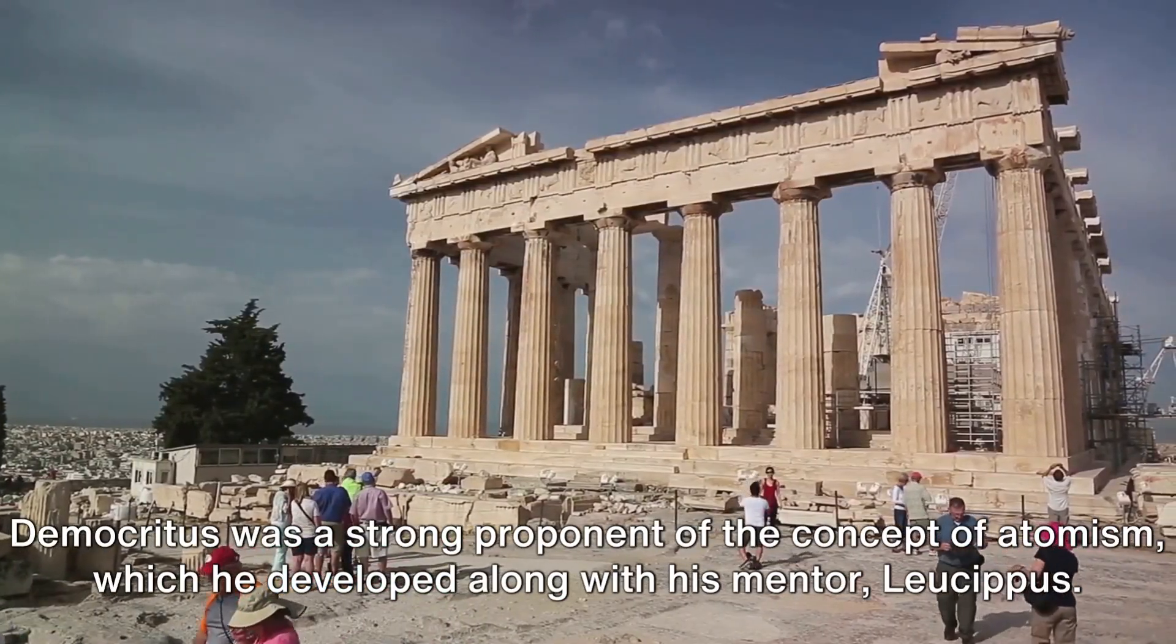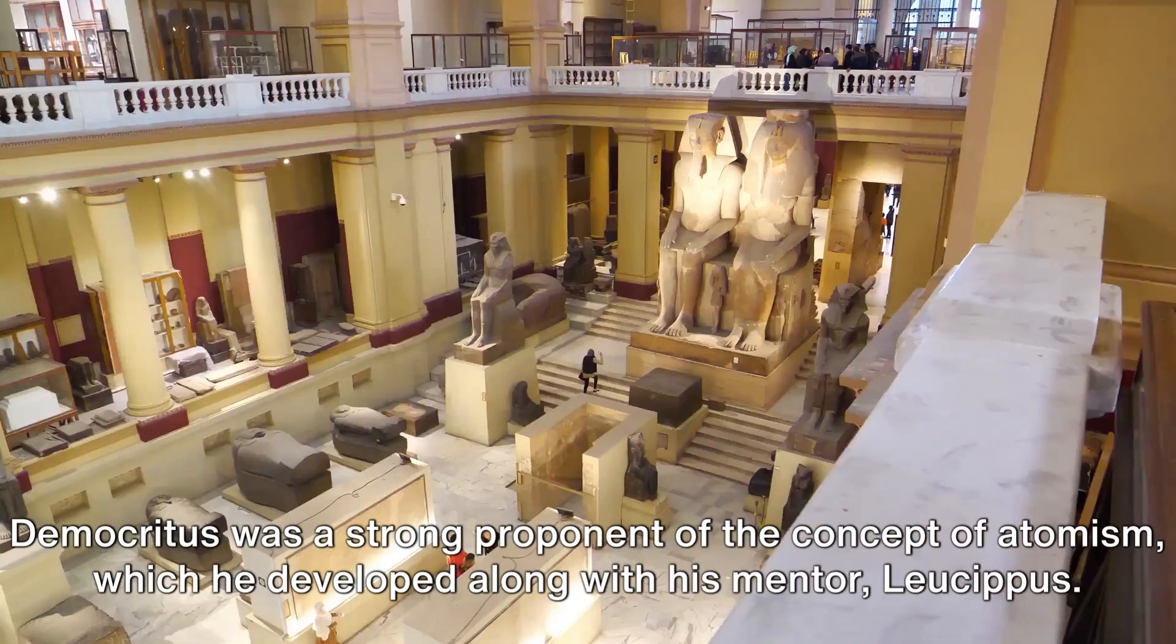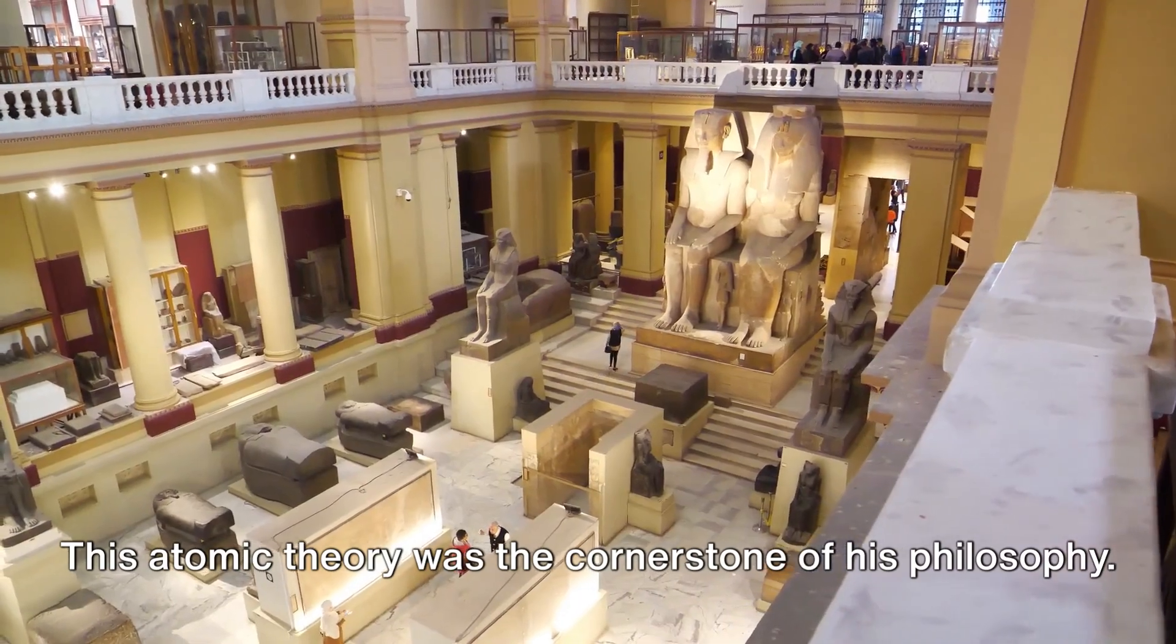Democritus was a strong proponent of the concept of atomism, which he developed along with his mentor, Leucippus. This atomic theory was the cornerstone of his philosophy.